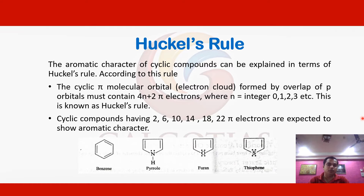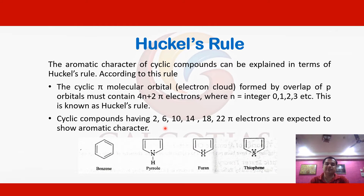The aromatic character of cyclic compounds can be explained in terms of Hückel's rule. According to this rule, the cyclic pi molecular orbital, formed by the overlap of p orbitals, must contain 4n+2 pi electrons where n is an integer value. This means cyclic compounds should contain pi electrons equal to 2, 6, 10, 14, 18, and so on.